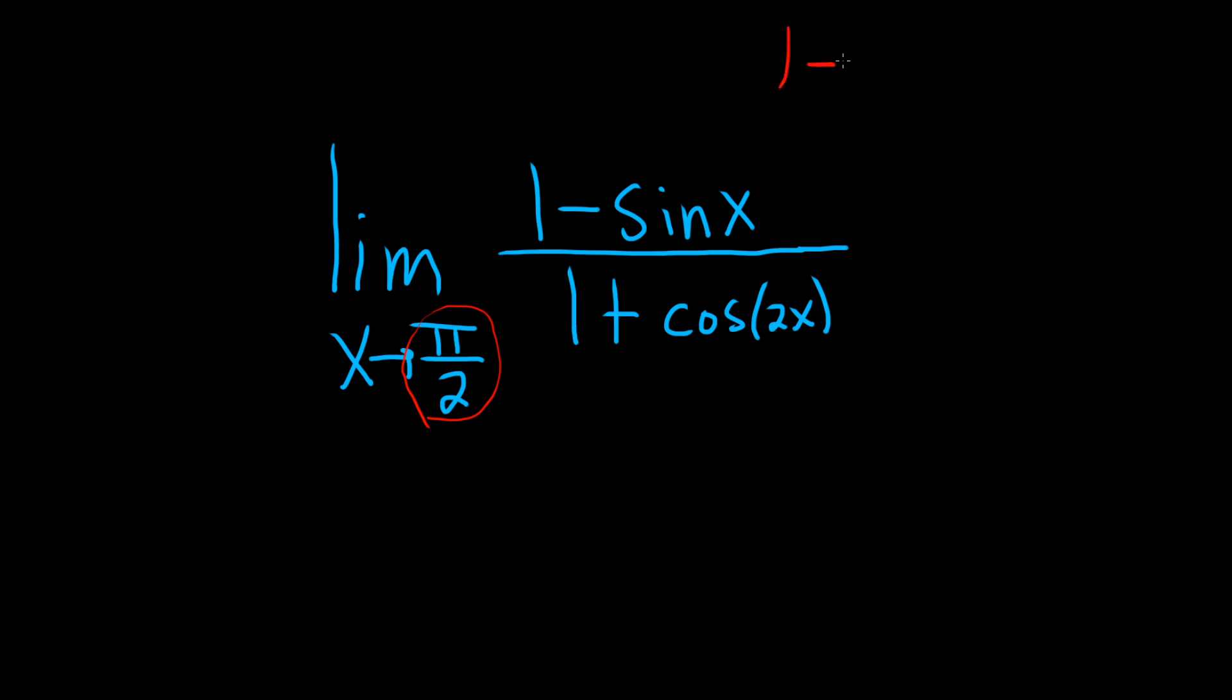So if we do that we get 1 minus the sine of pi over 2, over 1 plus the cosine of 2 times pi over 2. The sine of pi over 2 is 1, so we end up with 1 minus 1, and here we get the cosine of pi which is negative 1, so it's 1 plus negative 1. So it looks like we get 0 over 0.